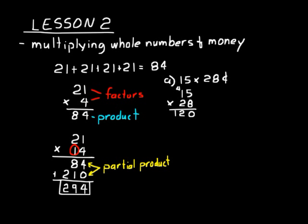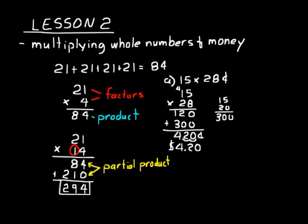Now let's do fifteen times twenty. You can think of two times fifteen, which is thirty, and then add a zero: three hundred. So twenty times fifteen is three hundred. We add those partial products together and the answer is four hundred twenty cents. If we want to change that to dollars, we move the decimal point over two places and get four dollars and twenty cents.